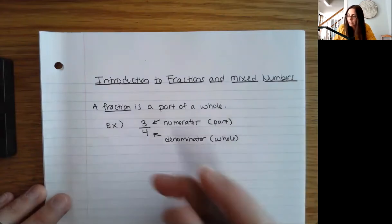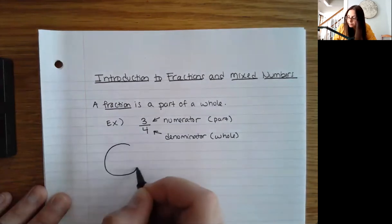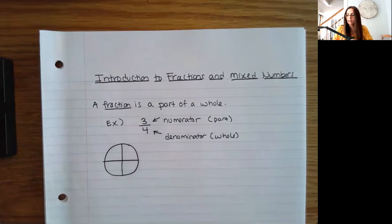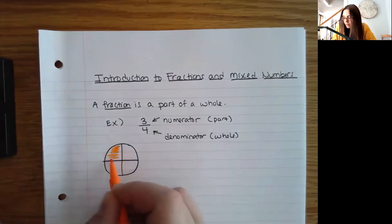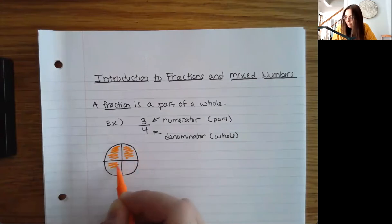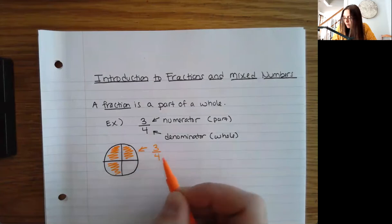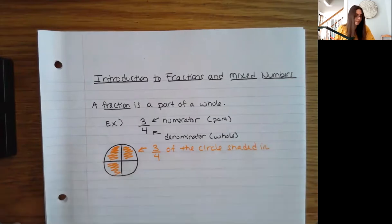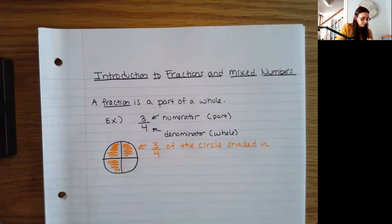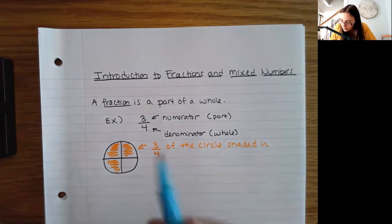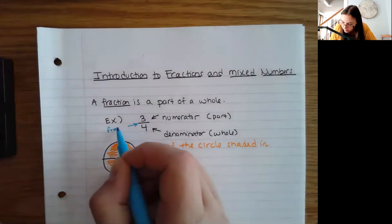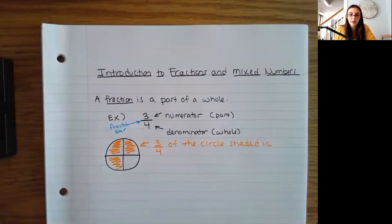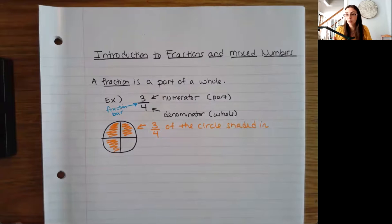So something like three fourths — let's say I have a circle, and I have four parts altogether, so the whole thing is cut into four parts. Maybe this is a pizza, and I'm eating three of those four parts, so I have three fourths of the circle shaded in. Also, as a side note, the little line in the middle is called your fraction bar — that line separating the numerator and denominator. Fractions are also another way that we can write division.